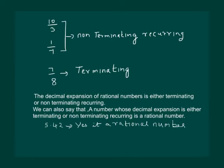If we are asked whether 1.72 with a bar is a rational number or not, we can say that since it is non-terminating recurring, hence yes, it is a rational number.